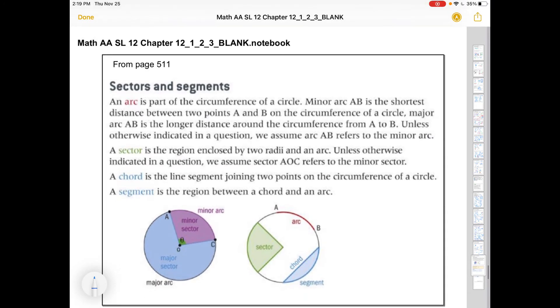That leads us to stuff about arc length and sectors and chords and segments. We defined a radian as an angle that creates an arc that is equal to the radius of the circle. This is taken straight from page 511. An arc is just a pie crust, and it can be formed by some angle theta.